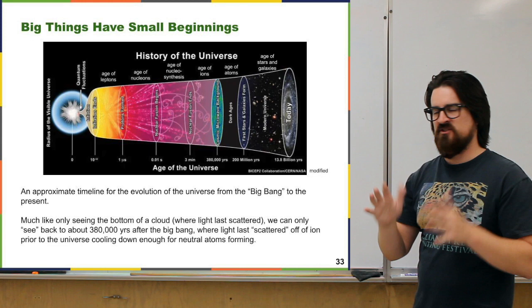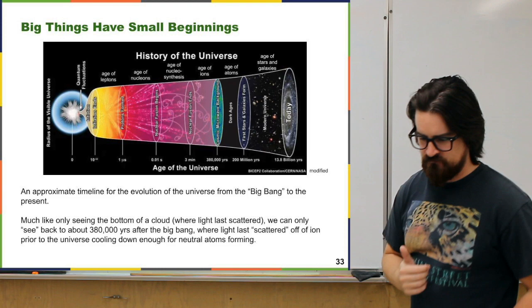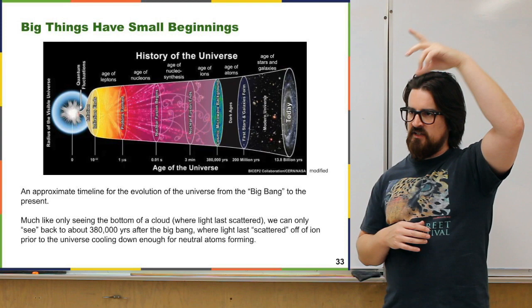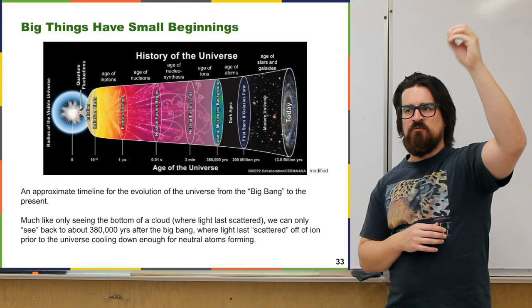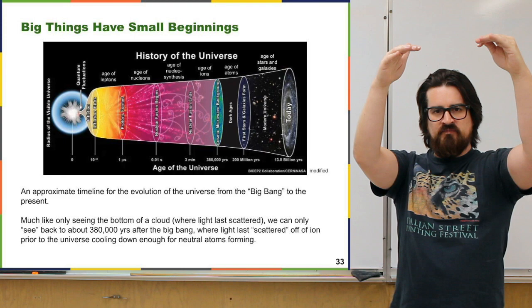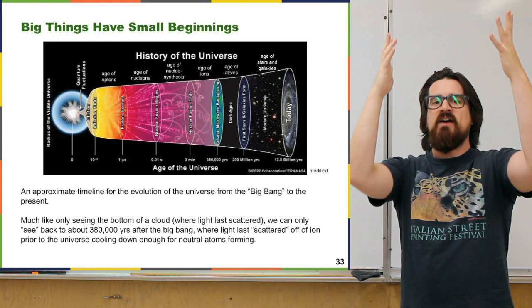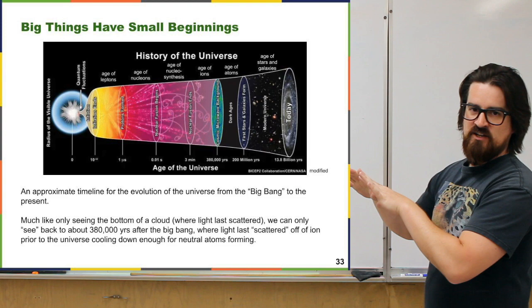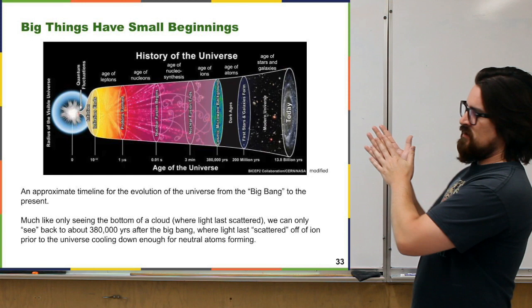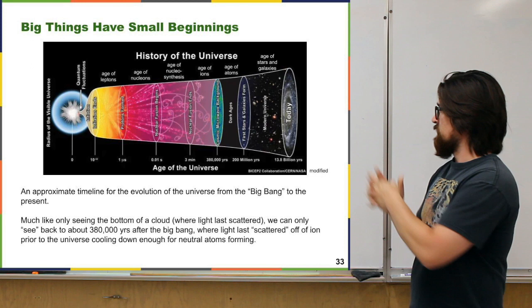At about 380,000 years after the beginning of the universe, we now have atoms and photons can finally travel in straight lines. That's where we get the cosmic microwave background — sometimes called the last scattering event in the early universe. The photons are no longer scattering off all these ions; they're actually traveling in straight lines, and we still eventually see some of them from the beginning of the universe — well, about 400,000 years after the beginning, which is pretty close to the beginning when the universe is almost 14 billion years old. One way to think about this is light trying to come through a cloud: you only see the bottom of the cloud because light bouncing around inside can't come straight to you. It's only after the photons leave the bottom of the cloud that you see it. Behind that 380,000-year point, that's still inside the cloud. Then atoms form, those atoms start to cluster together, form galaxies and stars, and we get to our modern universe.